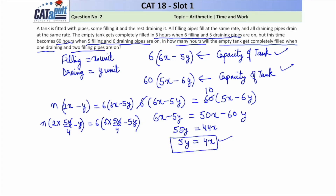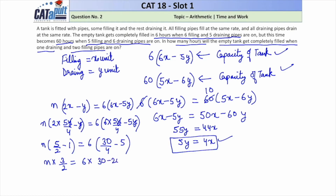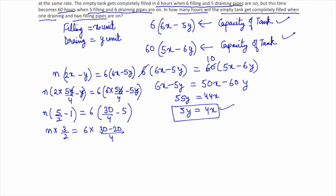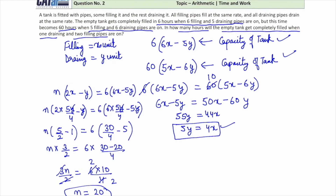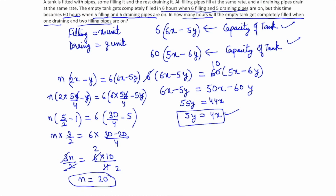After cancelling Y, we have n(5/2 − 1) = 6(30/4 − 5). Simplifying: n(3/2) = 6(10/4), which gives 3n/2 = 6 · (10/4) = 60/4 = 15. Therefore, n = 15 · 2/3 = 10... solving carefully: 3n/2 = 6 · 10/4 = 15, so n = 20. It takes 20 hours to fill the completely empty tank when one draining and two filling pipes are on.